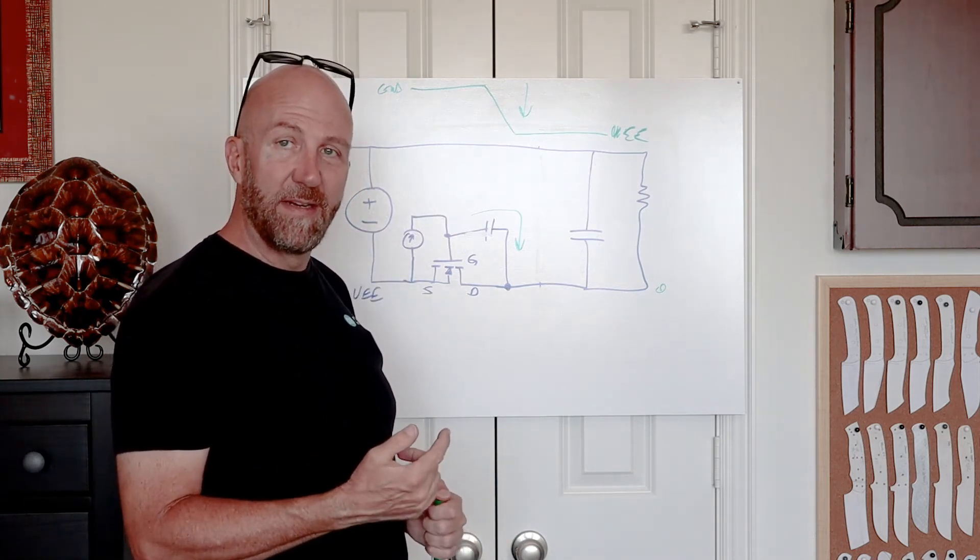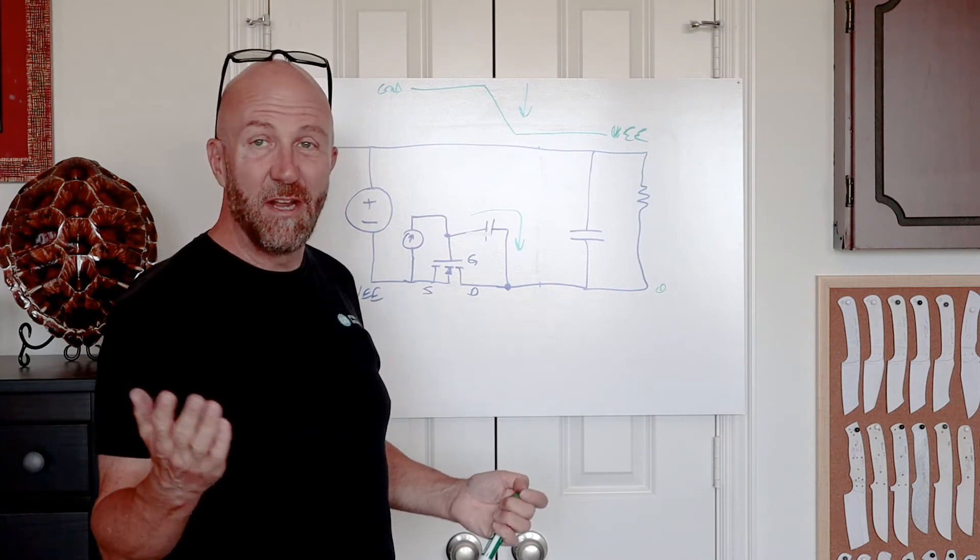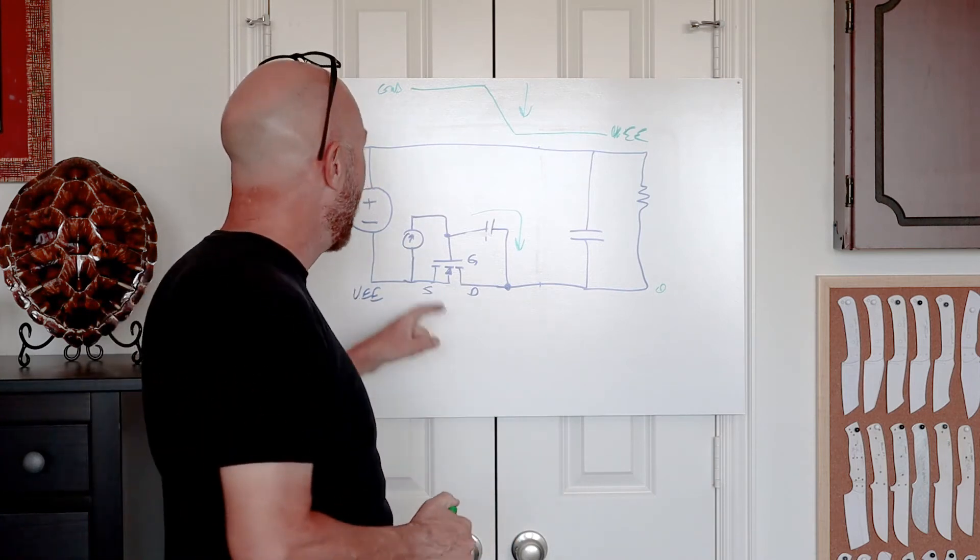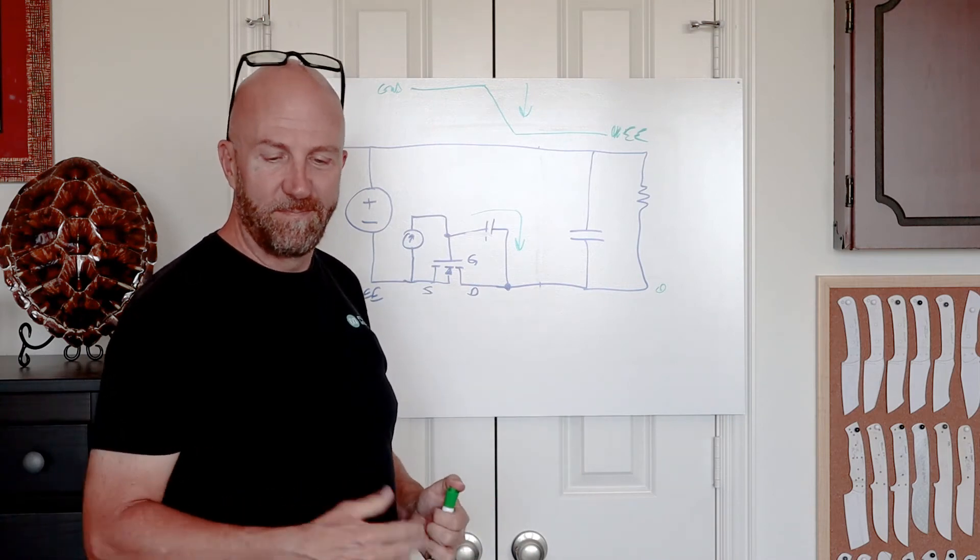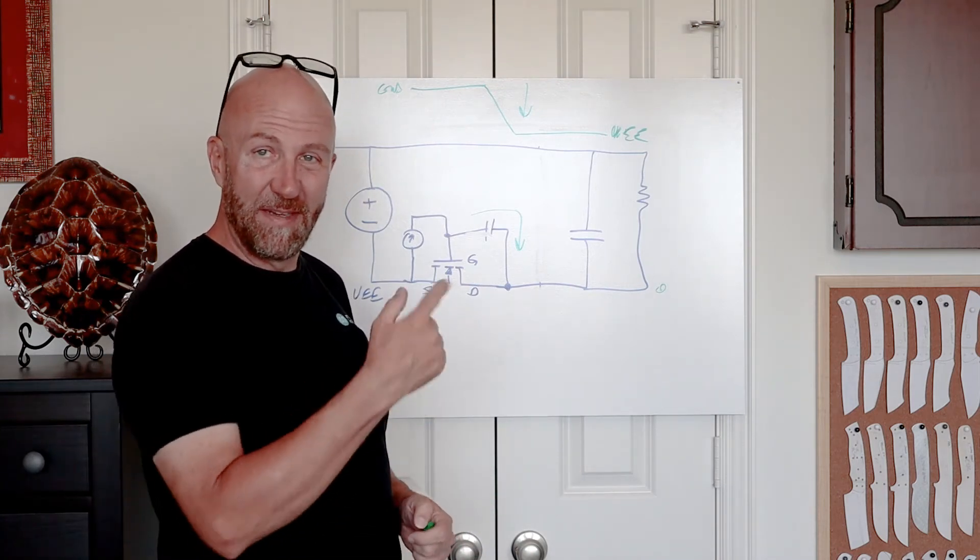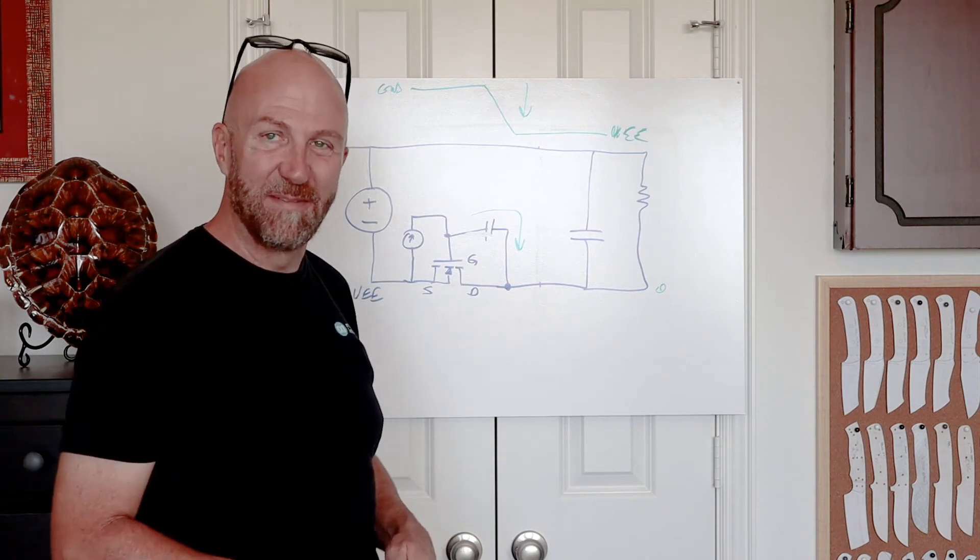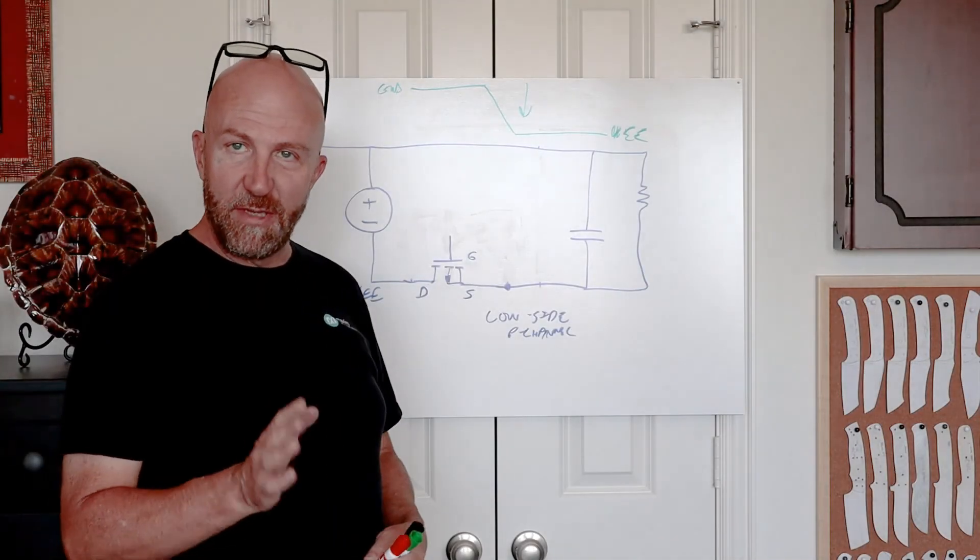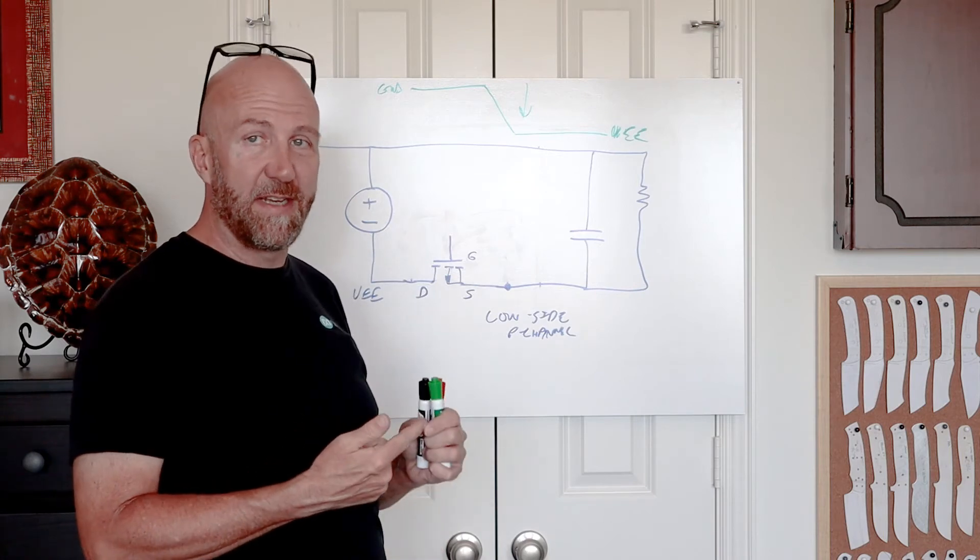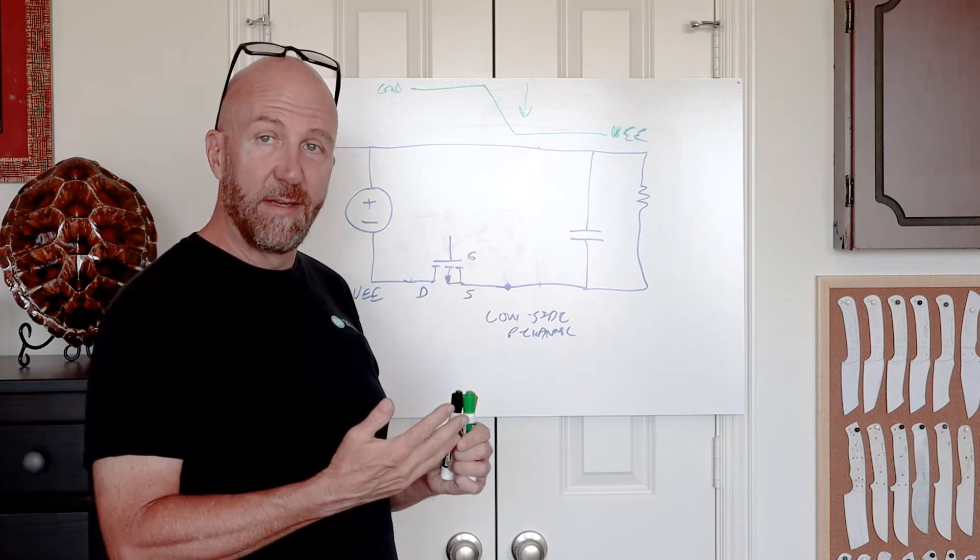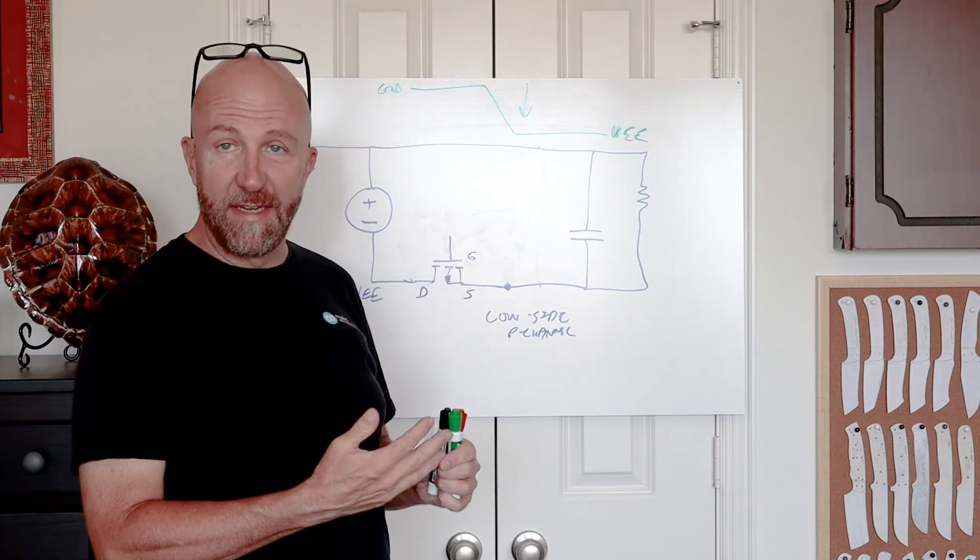Next thing we're going to talk about is something that, as far as I know, is just kind of a theoretical discussion, but we're going to replace this N-channel FET with a P-channel FET and show how that would work. Not that anybody ever does it, which I'll talk about in a second, but let me erase this and show you that circuit. Okay, so as I mentioned earlier, we talked about the three common hot swap circuits that you'll see, which is high side N-channel, high side P-channel, and then finally low side N-channel.